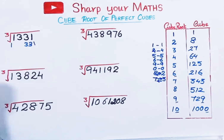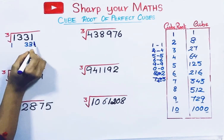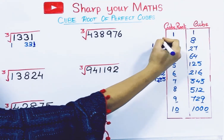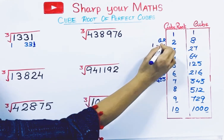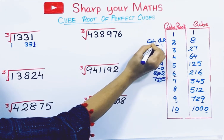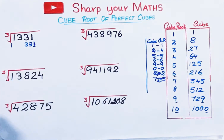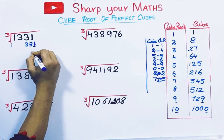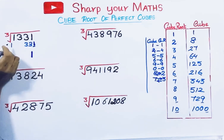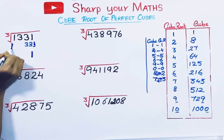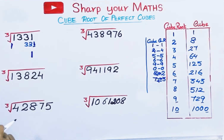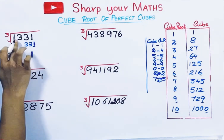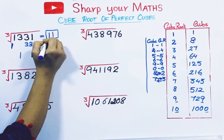The remaining digits form another group. Check the unit digit in the rightmost group — it ends with 1. If a cube ends with 1, its cube root ends with 1. So the cube root ends with 1. Now take the left group, which has only the digit 1. This 1 is closest to the cube 1, so take its cube root which is 1. We got the cube root of 1331, which is 11.